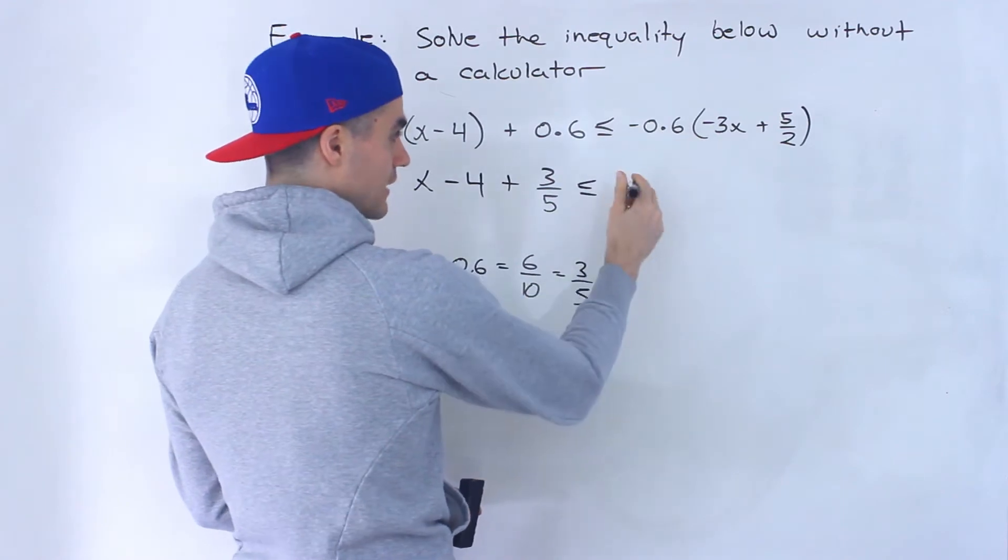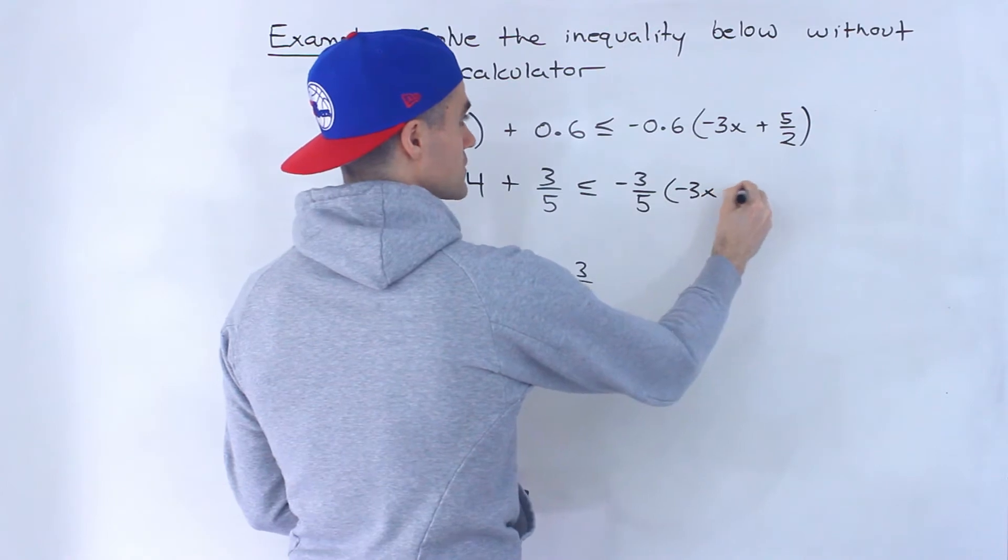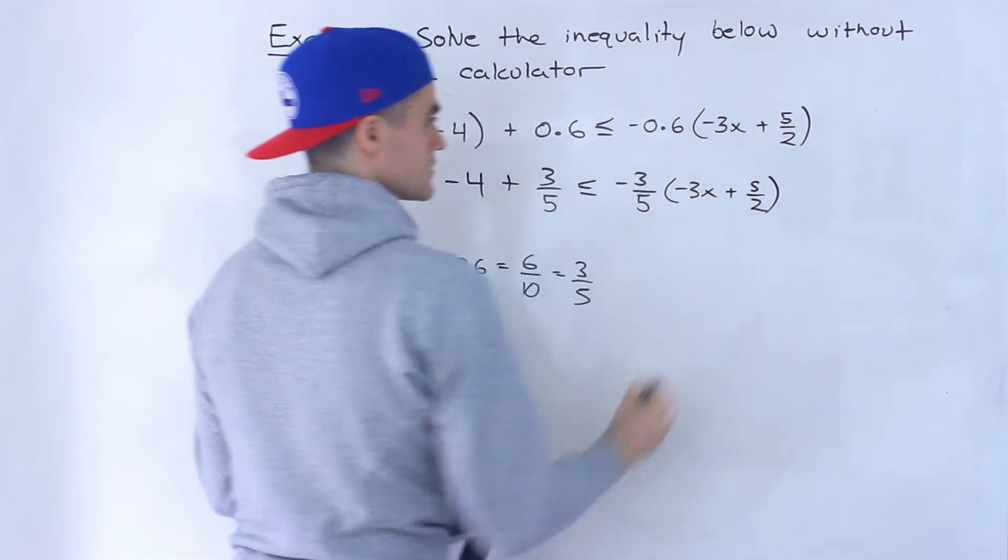And then this negative 0.6 is going to be negative 3 over 5. And then we'll have negative 3x plus 5 over 2.